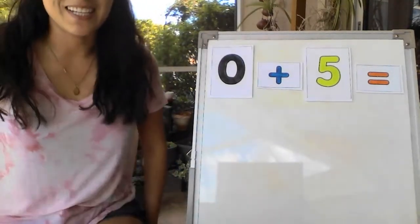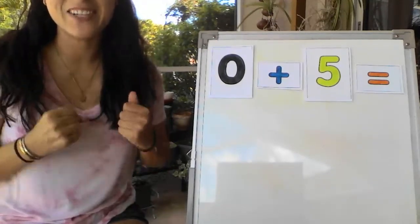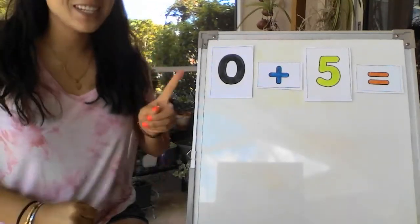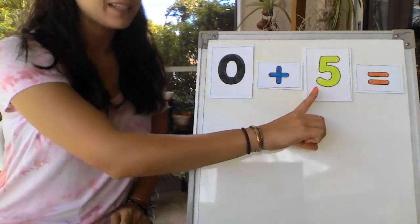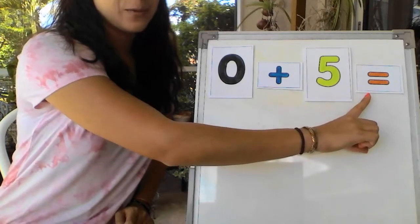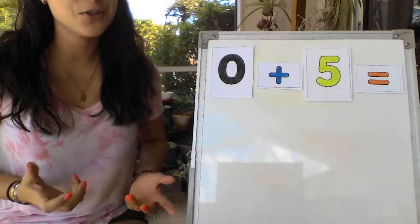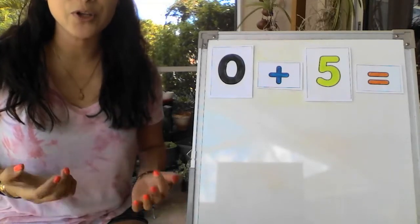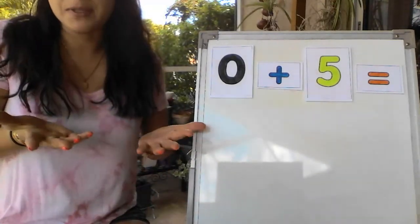This last number sentence is a challenge. And my students know that I love to try and trick them. So this number sentence says 0 plus 5 equals. Now here's the tricky part. How do you show 0 when we're using the hand and finger strategy? I can't put up zero fingers.